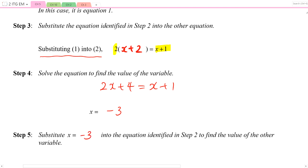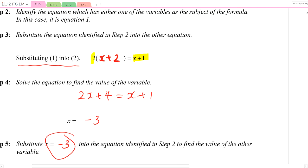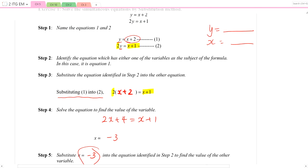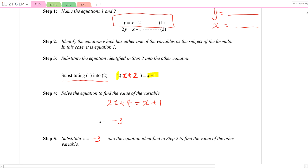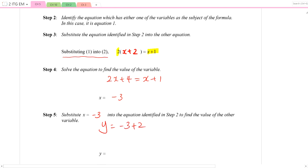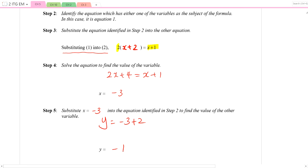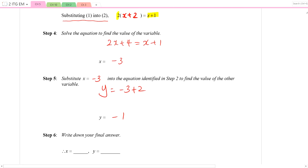I substitute this value back into an equation. I can choose equation 1 or equation 2. But keep in mind that I want to find the value of y, so it is more convenient to put it back into equation 1. Doing the substitution, we have y equals negative 3 plus 2, which gives negative 1. So writing down my final answer: x equals negative 3 and y equals negative 1.